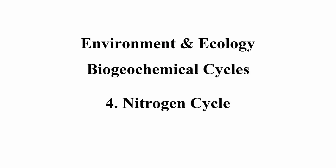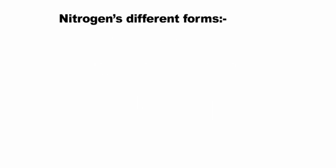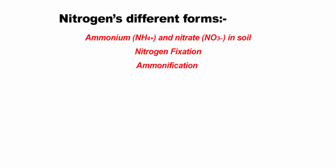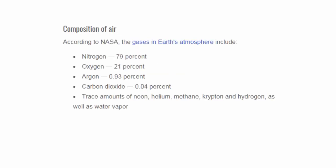The fourth one is nitrogen cycle. This whole nitrogen cycle is all about how nitrogen transforms into different forms in our environment. Nitrogen is a major constituent of the atmosphere, comprising about 79% of the atmospheric gases. Therefore, it is important to understand how the nitrogen cycle works.